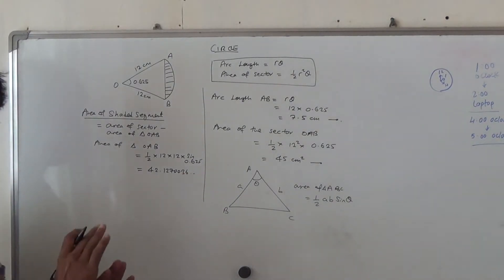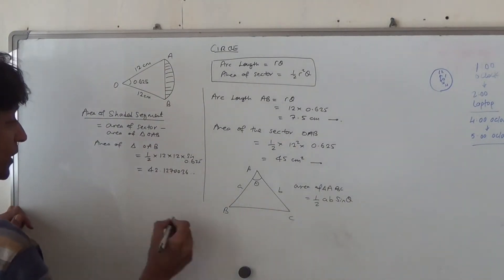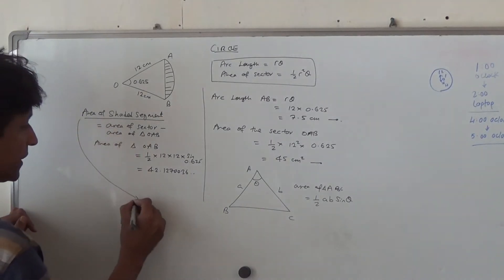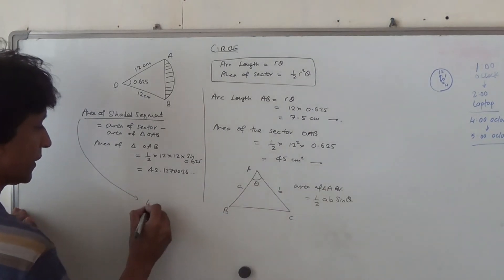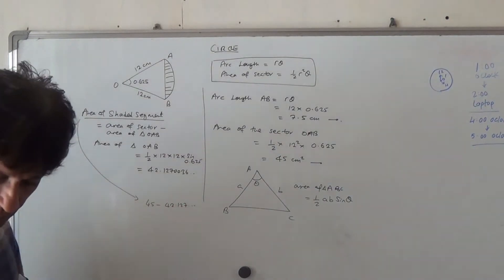Now, we got the answer. So here we go. You just take area of segment. It's going to be equal to area of the sector, which we found is 45, and then you take away 42.127, et cetera. So let's do that.